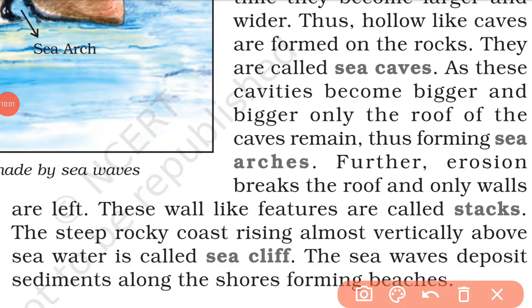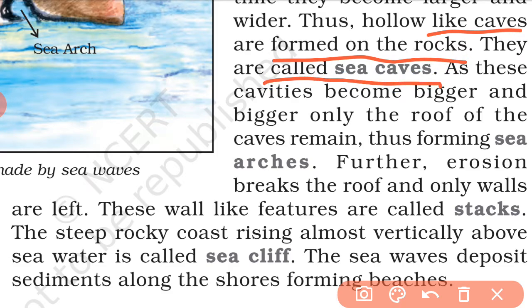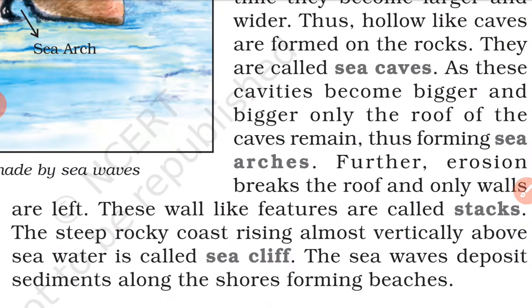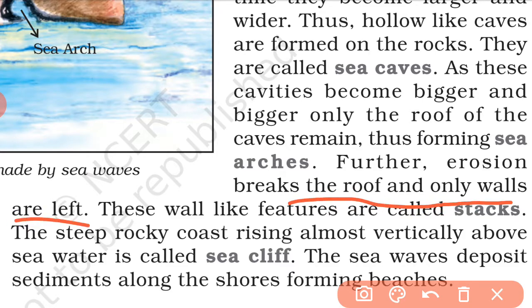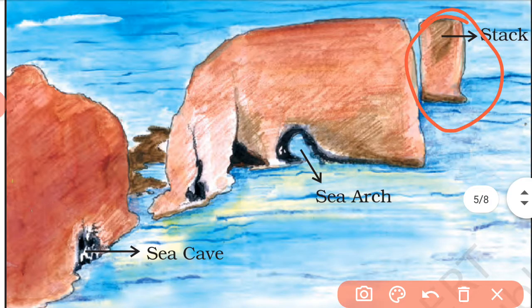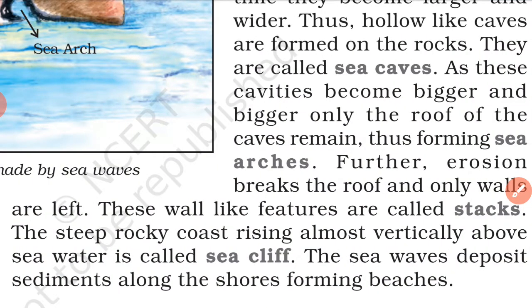Hollow cave-like formations on rocks are called sea caves. When the hole becomes bigger and bigger, only the roof of the cave remains, forming sea arcs. Further erosion breaks the roof, and only the walls are left — these are called stacks. The steep rocky coast rising almost vertically above sea water is called a sea cliff.